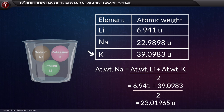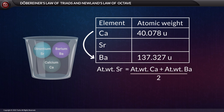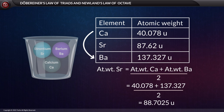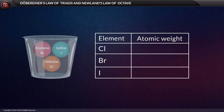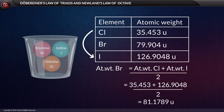The next example: calcium, strontium, and barium. The atomic weight of calcium is 40.078 u and that of barium is 137.327 u; their average is 88.7025 u, which is nearly equal to the atomic weight of strontium, 87.62 u. Third example: chlorine, bromine, and iodine. The atomic weight of chlorine is 35.453 and that of iodine is 126.9048; their average is 81.1789, which is nearly equal to the atomic weight of bromine, 79.904.